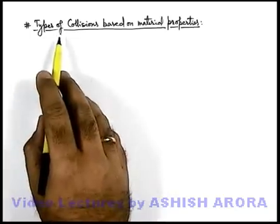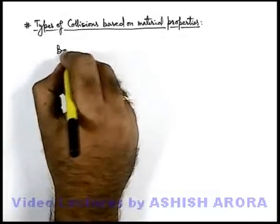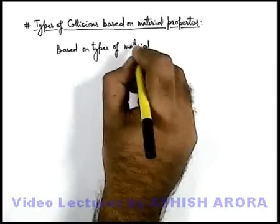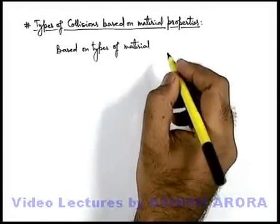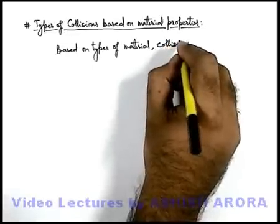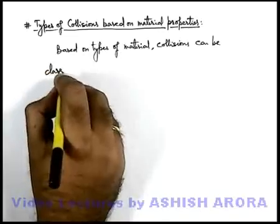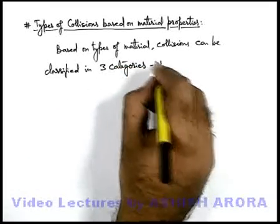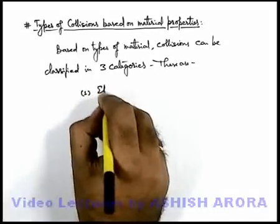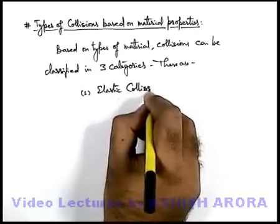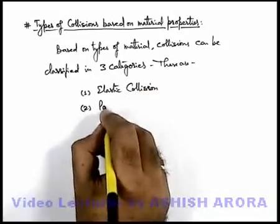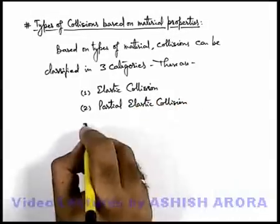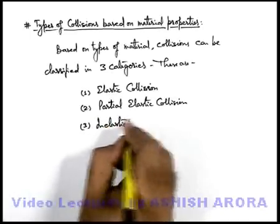Let us discuss types of collisions based on material properties. Based on the types of physical material which we use in different kinds of objects, collisions can be classified in three categories. These are: first, elastic collision; second, partial elastic collision; and the third one is inelastic collision.